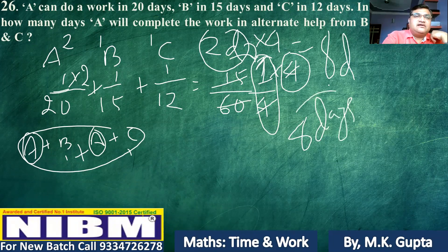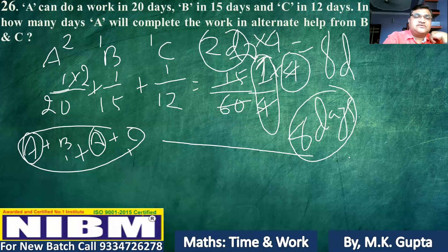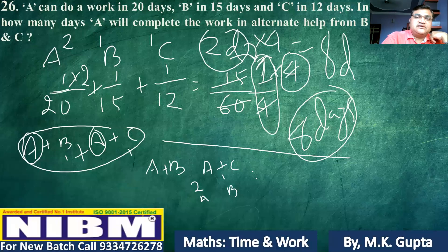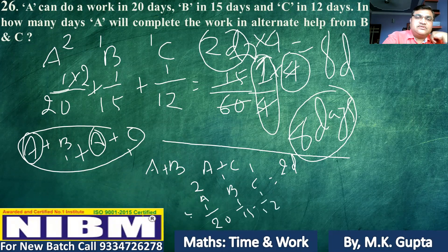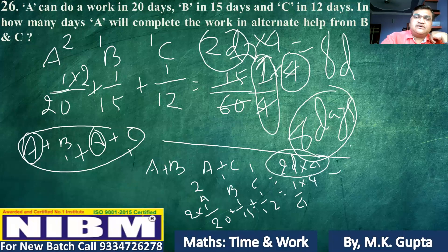It's very simple. In 2 days, A and B together and A and C together have done 1 by 4 of the work. We did 1 by 20 and 1 by 15, giving 1 by 25 per two-day block. When we have done 2 days, 1 by 4 is complete, so total is 8 days.